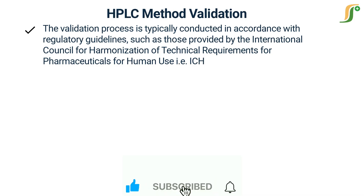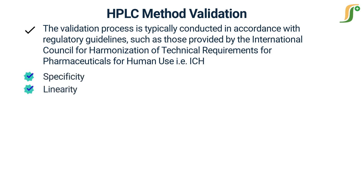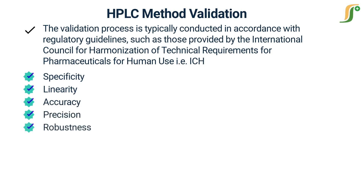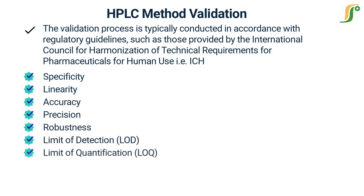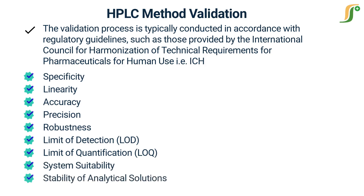There are 10 key parameters that are evaluated during HPLC method validation: Specificity, Linearity, Accuracy, Precision, Robustness, Limit of detection (LOD), Limit of quantification (LOQ), System suitability, Stability of analytical solutions, and Ruggedness.